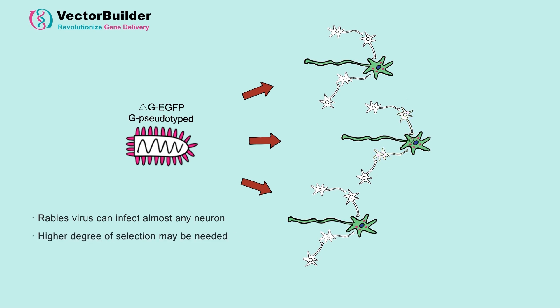Often, a higher degree of selection is important. For instance, when you want to study monosynaptic inputs of a neuronal subtype, like dopaminergic neurons.